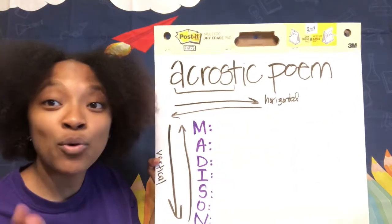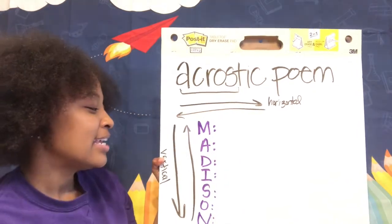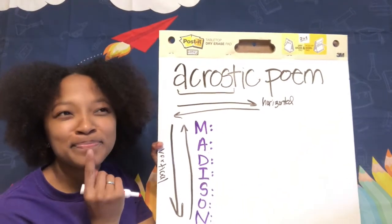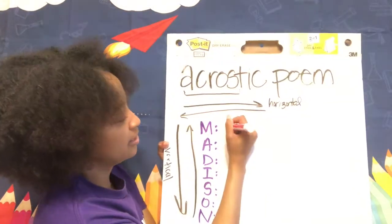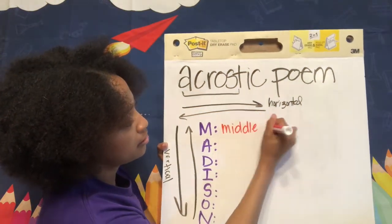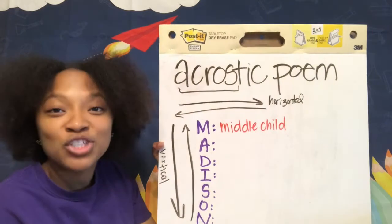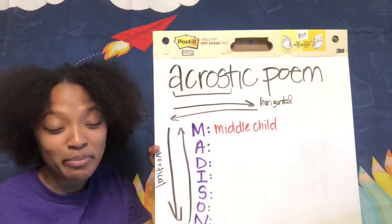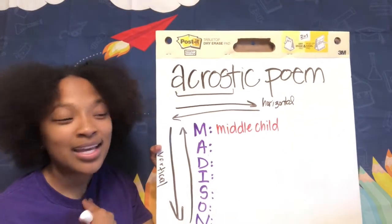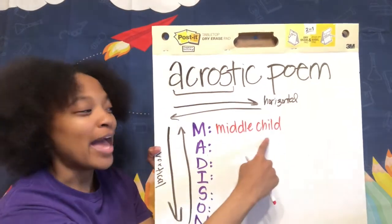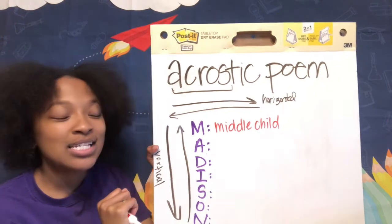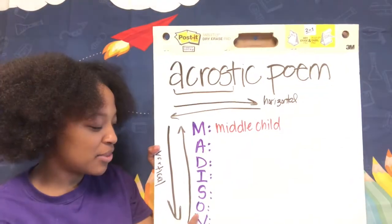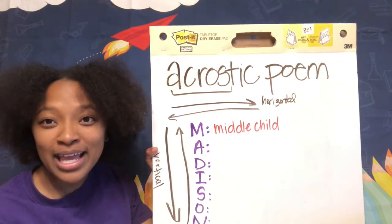I'm gonna think of a word or phrase about myself — about Madison — so you can get to know me a little bit. Something about me that starts with the letter M: I'm gonna go with 'middle child.' I'm the middle child, which means I have a big brother named Devin and a little sister named Kimmy. If you are the oldest child and you have an O in your name you can put that, or if you're an only child you can put that, or if you're the youngest and you have a Y you can put that there.